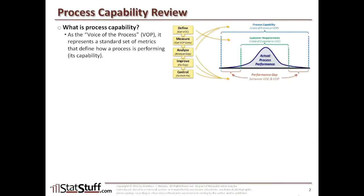Process capability refers to the voice of the process, or VOP, representing the standard set of metrics you might use to define how a process is performing or the capability of that process. The example we've given before is if we have a distribution reflected here of the actual process performance. If we're following the defined phase all the way through the DMAIC methodology, the defined phase is when we're trying to understand the voice of the customer, or VOC — that's where the customer defines for us the requirements or their expectations for whatever it is they want us to perform from the process itself.